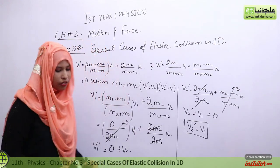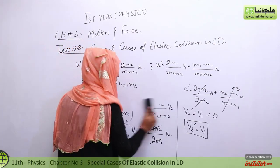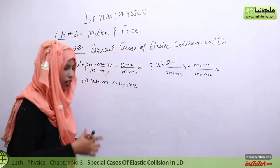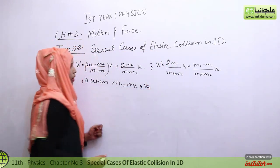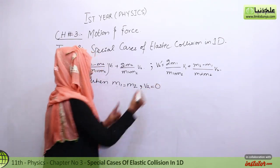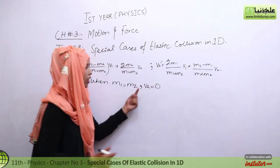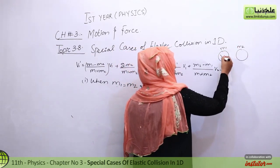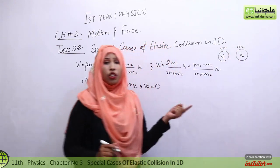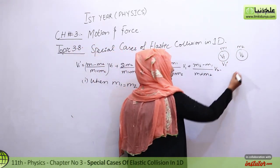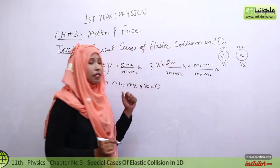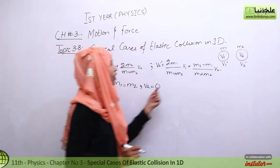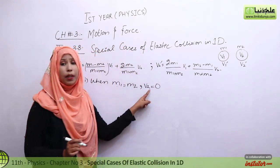Now let's discuss Case 2: when m1 equals m2 and v2 is zero. This means the masses are equal and the second mass is initially at rest. Let's draw this: mass 1 has initial velocity v1, and mass 2 has initial velocity v2 equal to zero. After collision, the velocities become v1' and v2'.